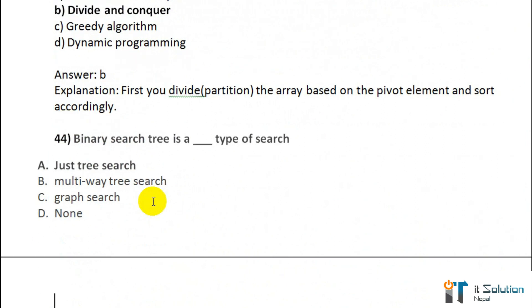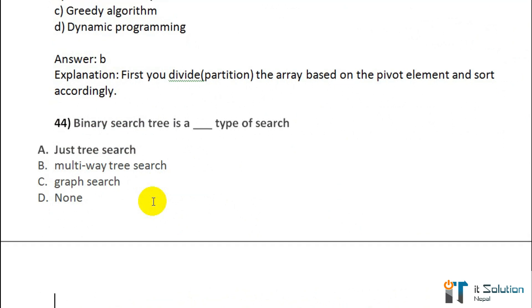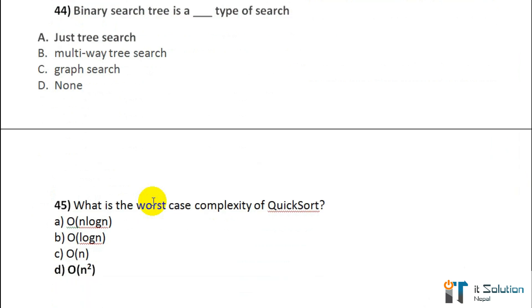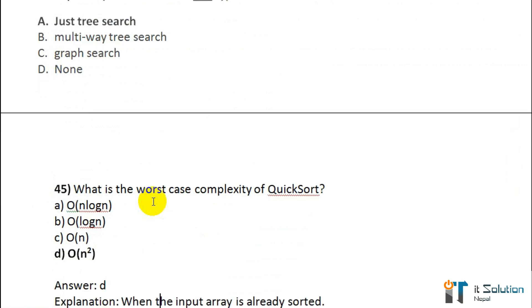Question number 44: Binary search tree is what type of search? Option A — Josh tree search. Question number 45: What is the worst case time complexity of quick sort? Its correct answer is O(N²).